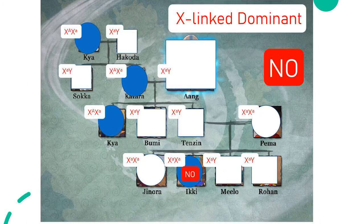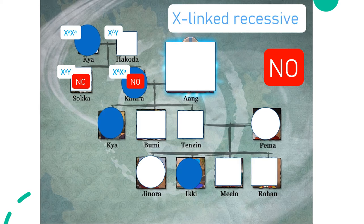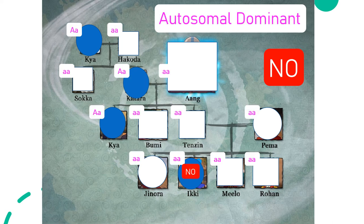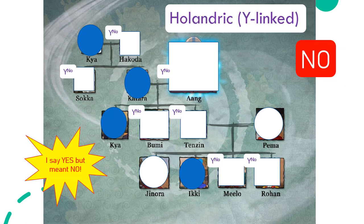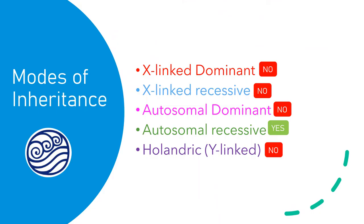Starting again with X-linked dominant: this does not work because Ikki does not have a dominant allele on at least one of her X chromosomes. X-linked recessive does not work because Sokka and Katara — Sokka doesn't need to be doing any waterbending, and Katara does not have both recessive alleles on her X chromosomes. Autosomal dominant also does not work due to Ikki. Autosomal recessive does not work. And holandric also works. So here are our modes of inheritance that worked and didn't work.